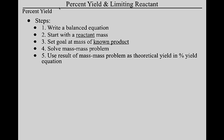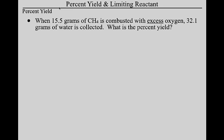Here's what these problems look like. Coming back to our methane reaction, the question reads: you take 15.5 grams of methane, you light it on fire, you burn it in all the oxygen you need — that's called excess oxygen — and you collect the water and the water weighs 32.1 grams. What's your percent yield? By the way, this is also the answer to conclusion question four in the lab — when did you do a combustion reaction? When you lit your Bunsen burner.